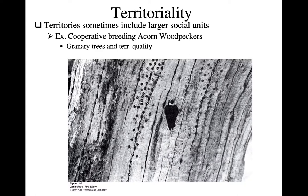Sometimes territories can include larger social groups than just the breeding pair and their offspring. One species in Texas that illustrates this is the acorn woodpecker, which practices cooperative breeding. They establish territories whose quality is really defined by the number and quality of what are called granary trees and the oak habitat generally. These granary trees are dead trees or snags where individuals in the group fill holes with acorns, using them as a cached resource when acorn availability is low.